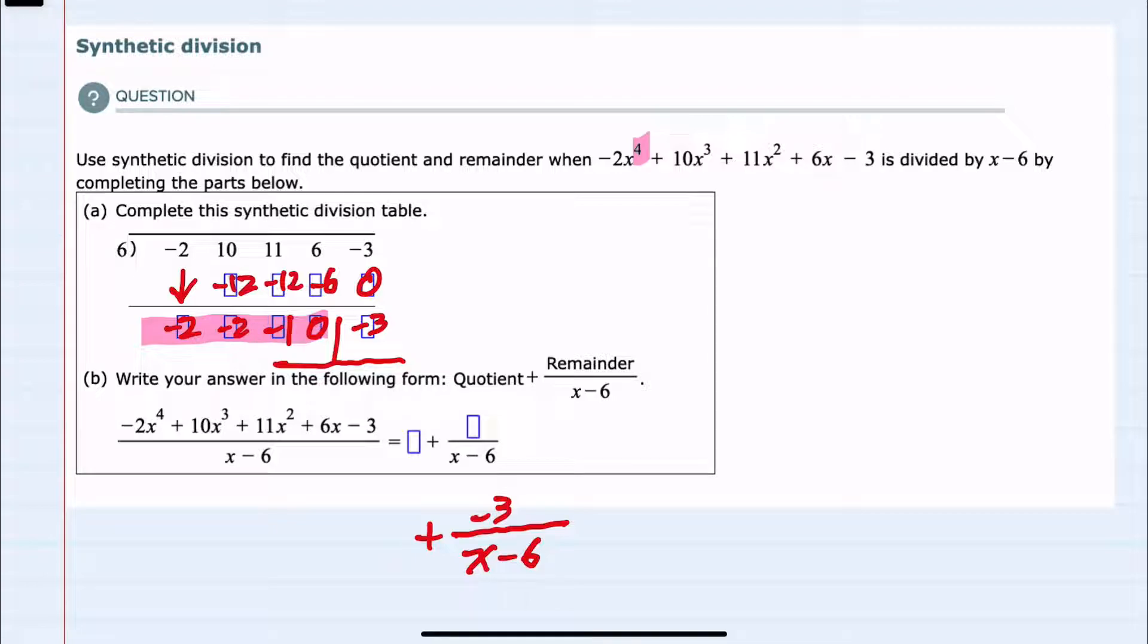The first minus 2 gives me a minus 2x³. The next minus 2, we would decrease that degree by 1, so that's a minus 2x².